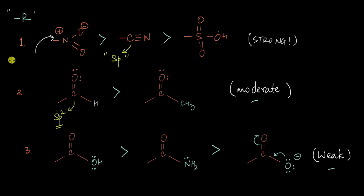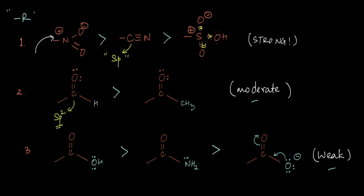For the sulfonic acid group (SO3H), moving the pi bond to oxygen gives a positive charge on sulfur. Sulfur is a relatively large atom and less electronegative than carbon and nitrogen, so it can hold this positive charge better. However, sulfur is also attached to three oxygen atoms, and these highly electronegative oxygen atoms pull electrons towards themselves via induction, making this sulfur really electron deficient. Because of the presence of three oxygen atoms, the sulfonic acid group turns out to be a strong -R group, weaker only to NO2 and CN. It is better to simply remember that NO2 is the strongest -R group, followed by cyano, followed by sulfonic acid.